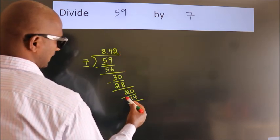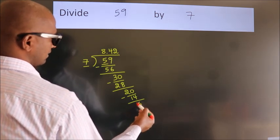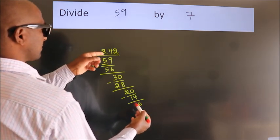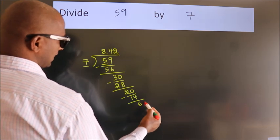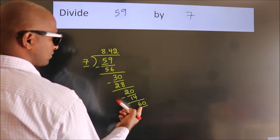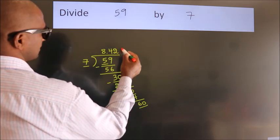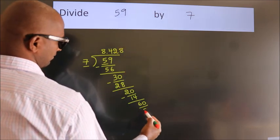Now we subtract. We get 6. After this, we already have the decimal. So directly take 0. So 60. A number close to 60 in 7 table is 7, 8, 56.